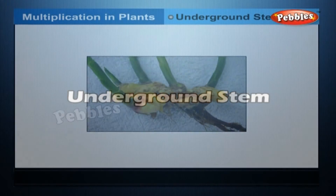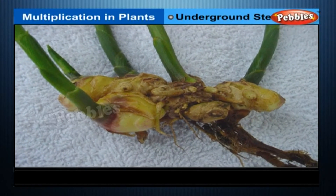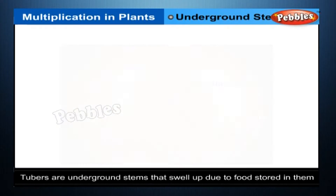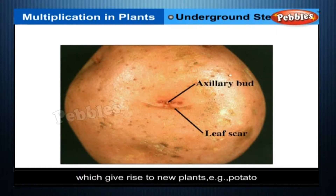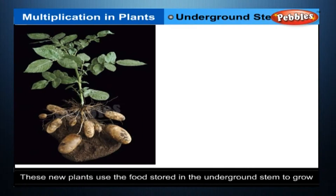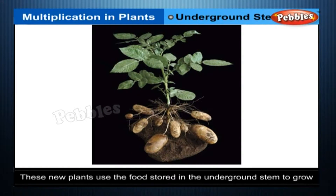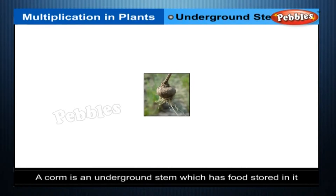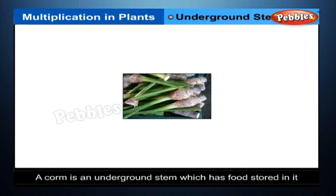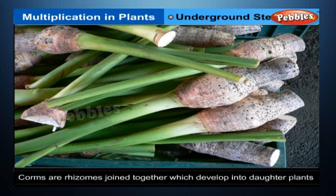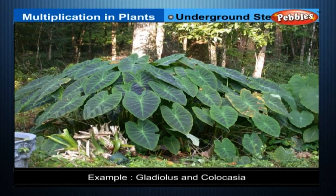Tubers are underground stems that swell up due to food stored in them. They have buds in the eyes which give rise to new plants, e.g. potato. These new plants use up the food stored in the underground stem to grow. A corm is an underground stem which has food stored in it. Corms are lots of rhizomes joined together which develop into daughter plants, e.g. gladiolus and colocasia.